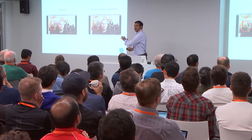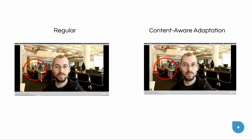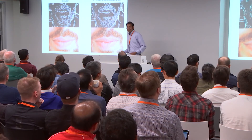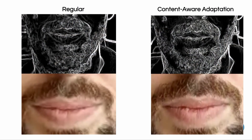Here's an example: Cesar on a regular video call versus Cesar on a content-aware adapted call. The interesting thing — the background is sharper on the regular call, but the face detail is better on the adapted call. To show this difference more powerfully, we zoomed into Cesar's mustache. You can see the regular experience on the left and the content-aware adapted experience on the right, with edge detection applied. There are significantly more details preserved with content-aware adaptation.